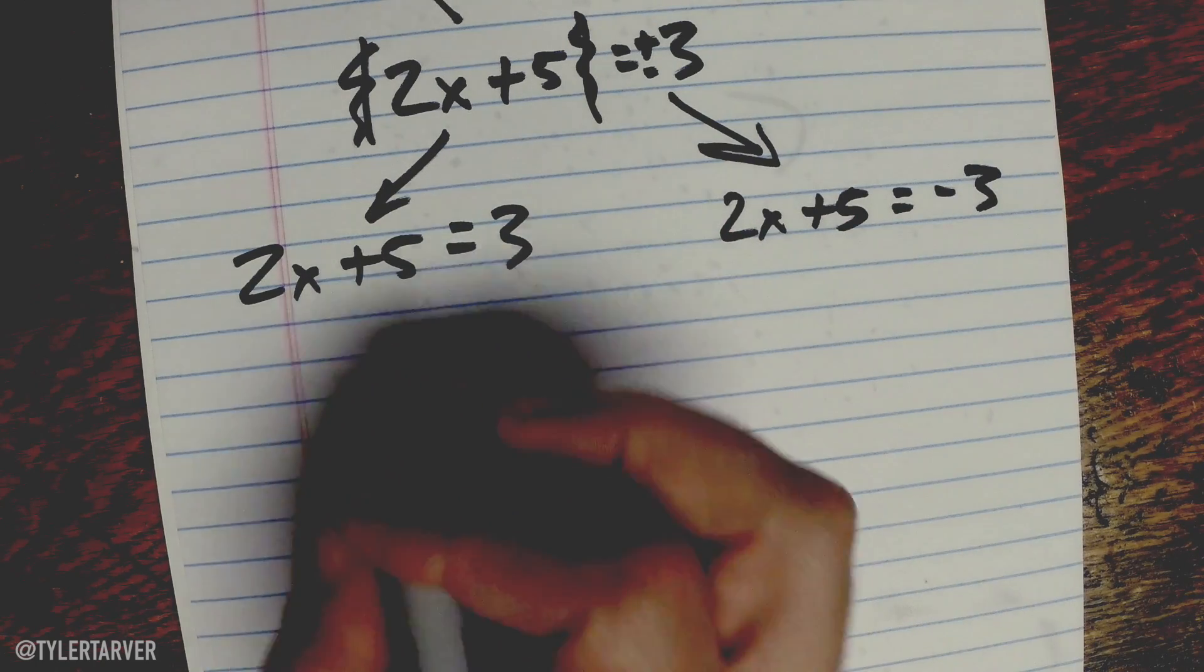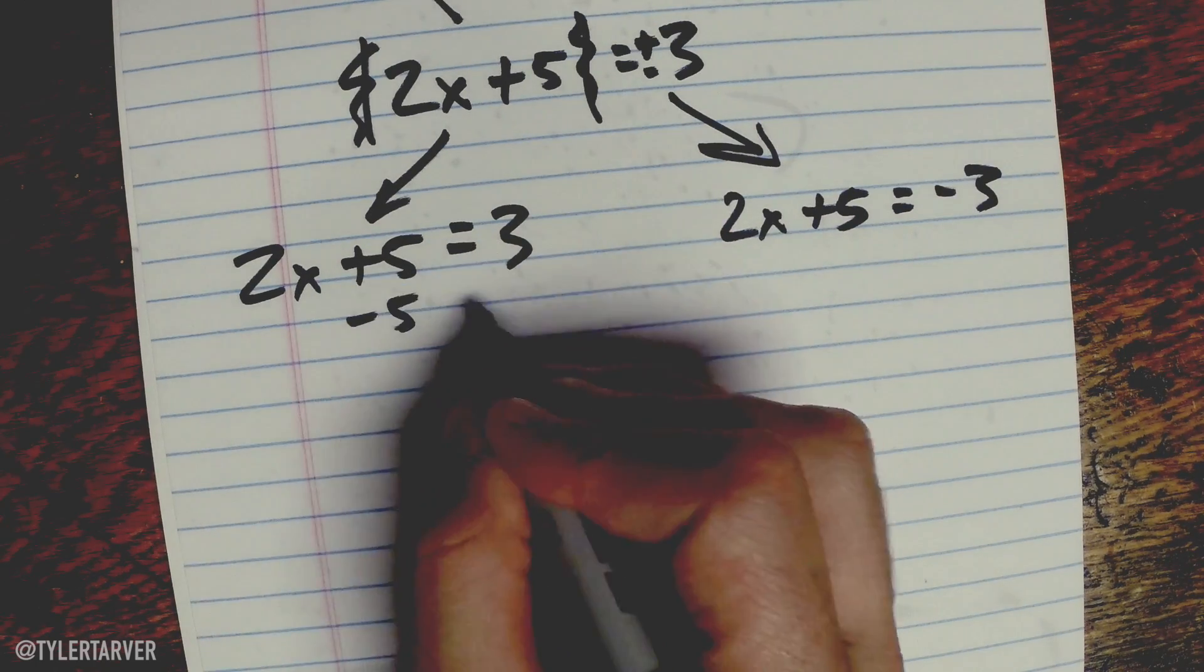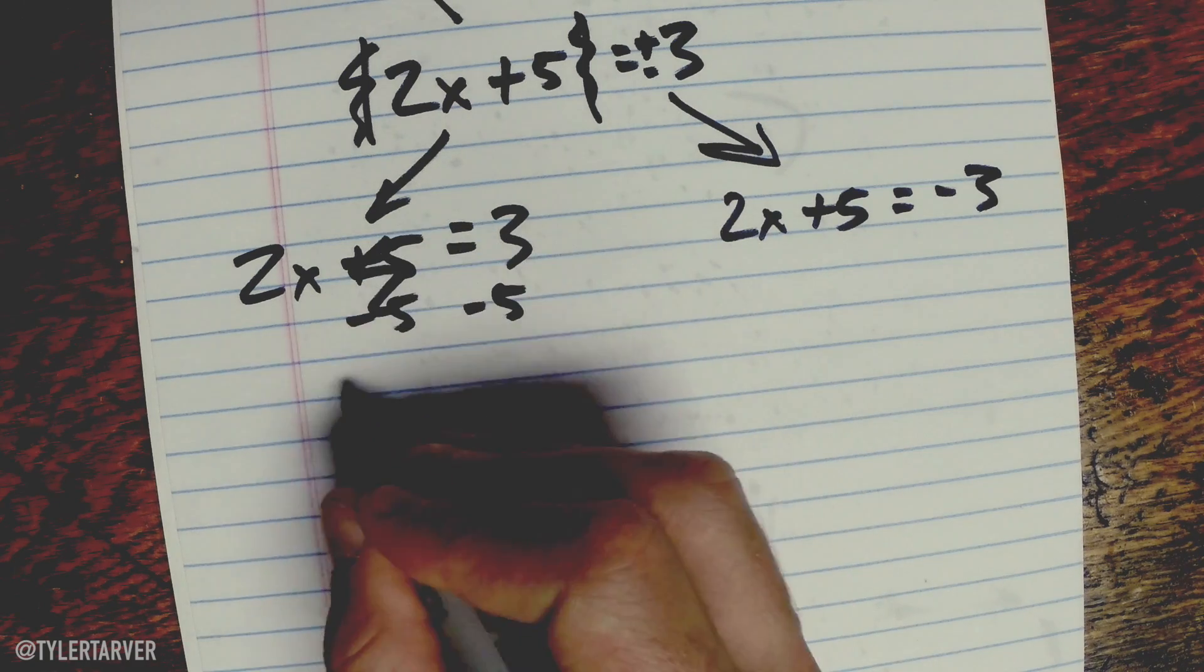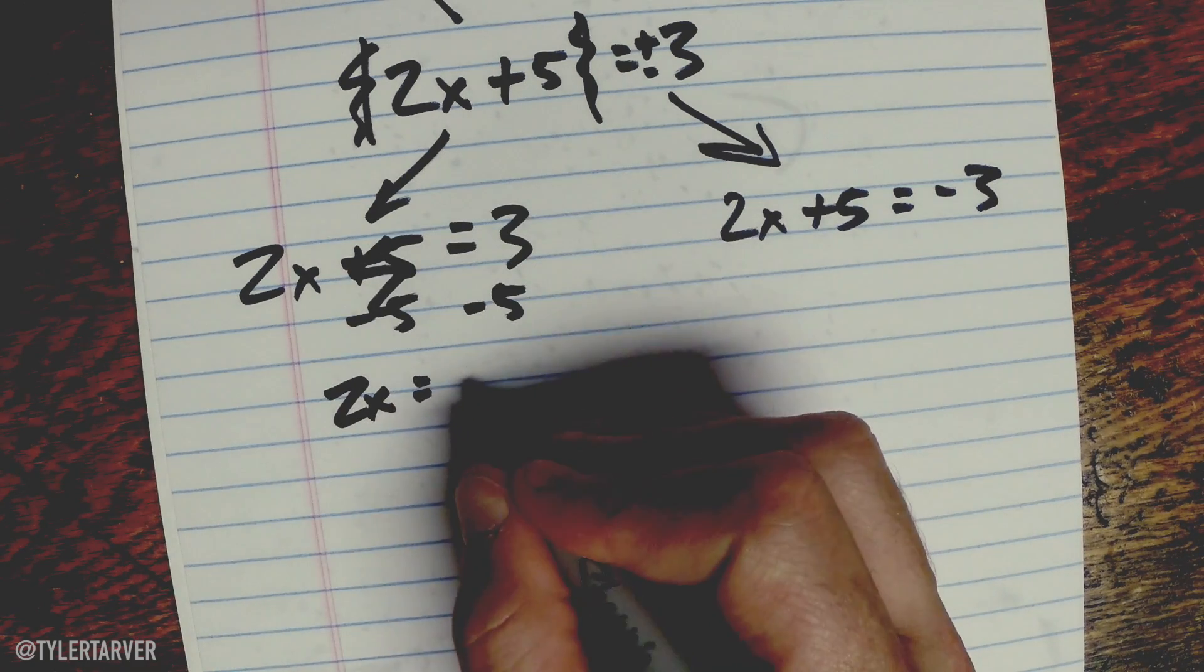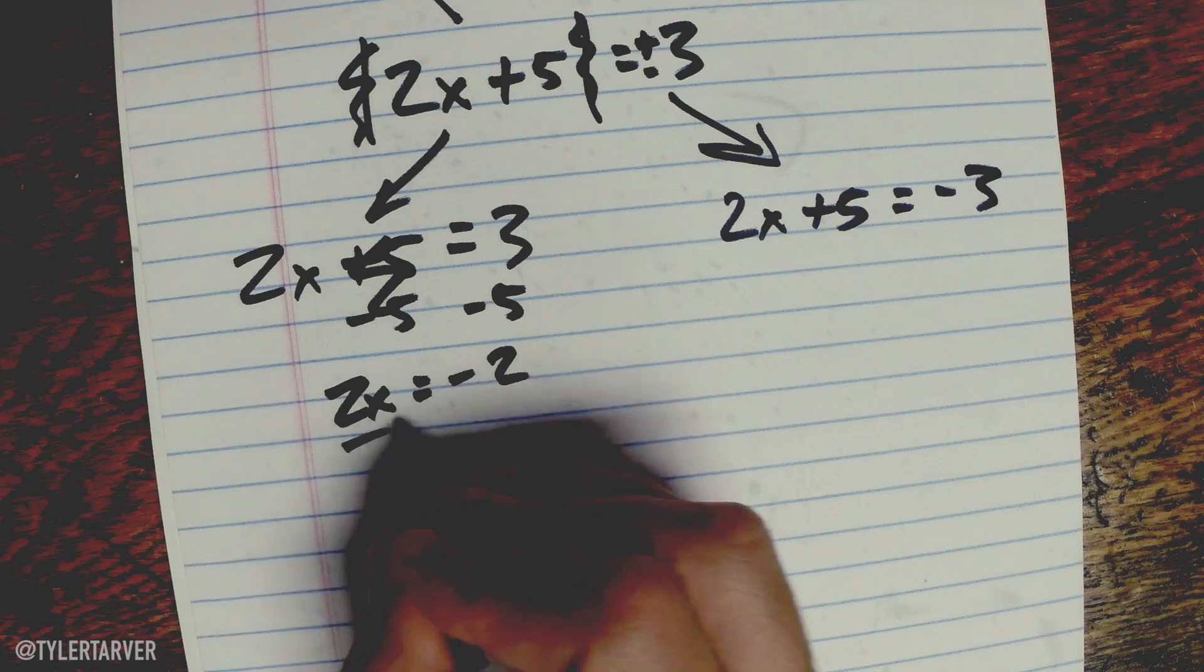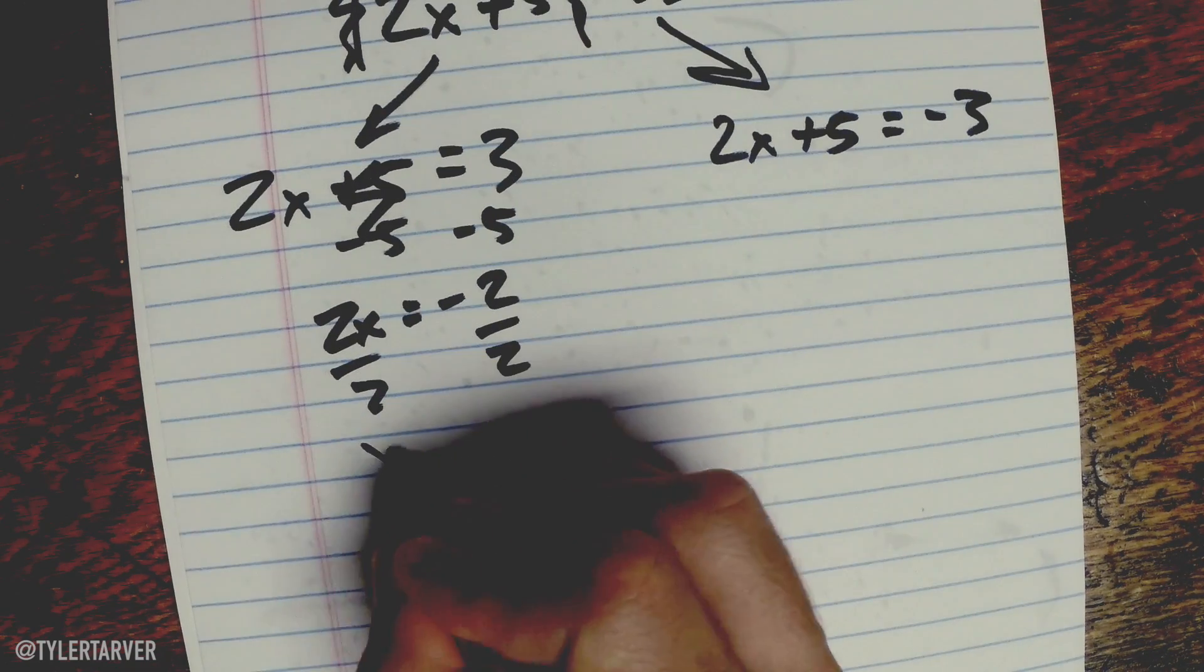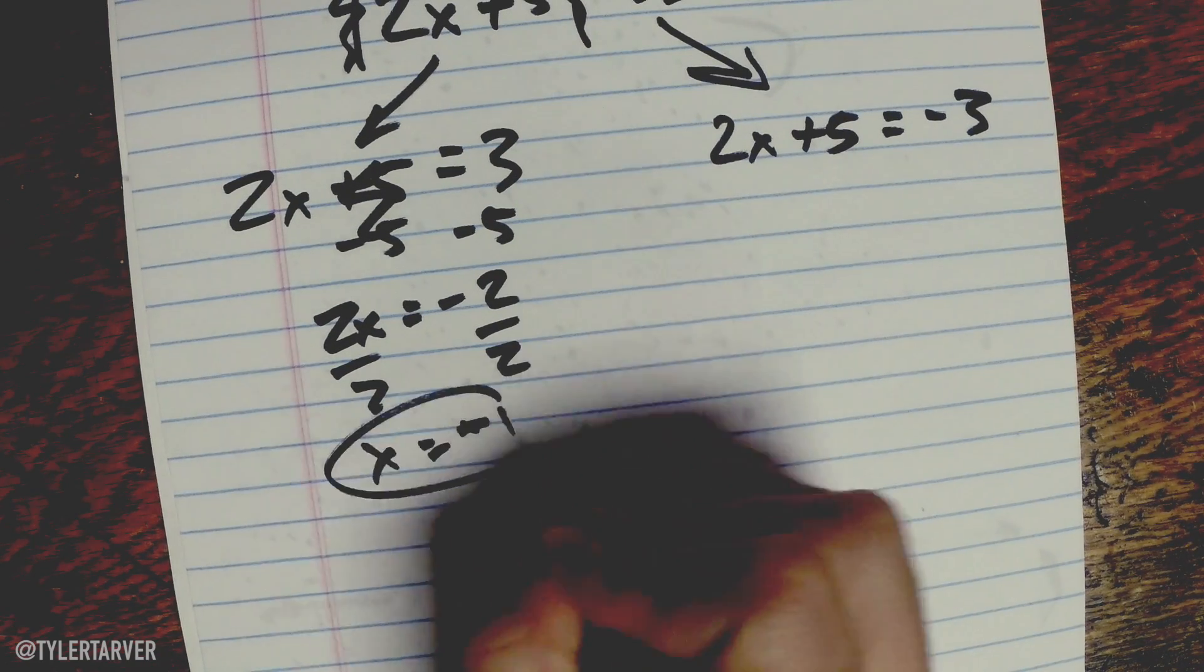So we subtract five from both sides, cancels out, 2X equals negative 2, divided by 2, X equals negative 1. That's one possibility.